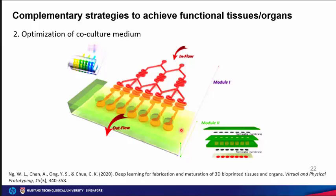Another challenge is the formulation of a common culture medium for multiple cell types within a single bioprinted tissue construct. It is a daunting task — typically, more sensitive cell types should have a higher weighting in the formulation, and the process is usually conducted via trial and error. However, with the rise of deep learning, supervised learning models trained on past experimental data can potentially help predict the resultant biological endpoint from input culture medium parameters, accelerating the optimization process.